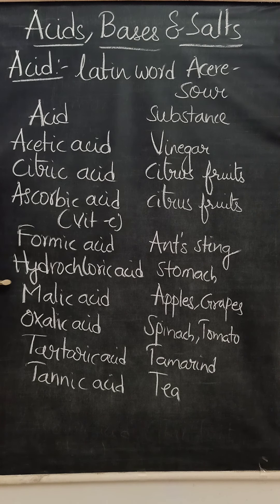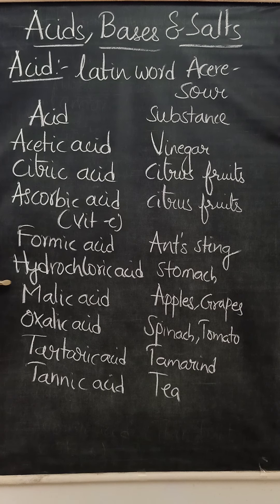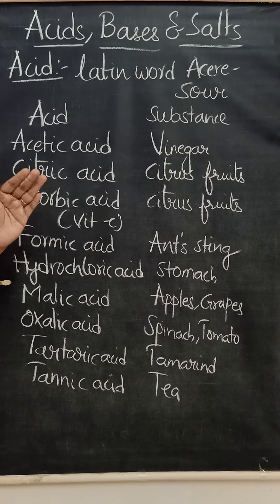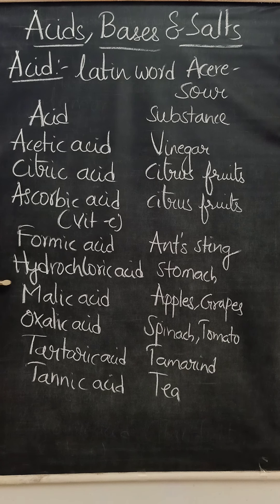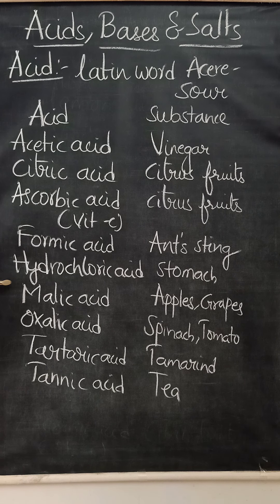Hope you have understood what an acid is. Acids are sour in taste because they contain acids in them. Now we will discuss about bases. Have you ever observed baking soda? If you taste it, you will feel it is bitter in taste. And if you rub that baking soda between your fingers, you will feel that it is soapy. These kinds of chemical substances which are bitter in taste and soapy to touch are called basic substances.